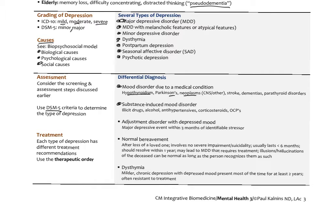Substance-induced mood disorders are also important to consider. Illicit drugs, alcohol, and even some medications — like antihypertensives, corticosteroids, and oral contraceptives — can induce depression. Oral contraceptives can impair methylation detox pathways in the liver, leading to accumulation of estrogen and other hormones in the blood that can affect the brain, particularly in poor methylators.